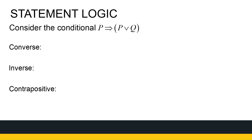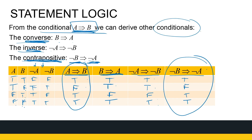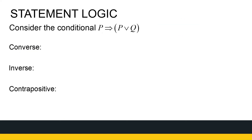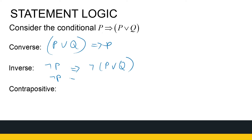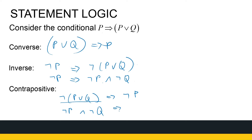As a more complex example, consider the conditional P→(P∨Q). Its converse is (P∨Q)→P. The inverse is ¬P→¬(P∨Q), which can be rewritten as ¬P→(¬P∧¬Q) using De Morgan's law. The contrapositive is ¬(P∨Q)→¬P, rewritten as (¬P∧¬Q)→¬P. This illustrates how logical equivalences let us manipulate and rewrite conditional statements.